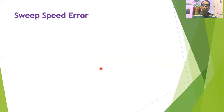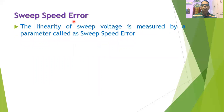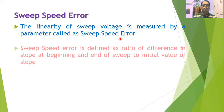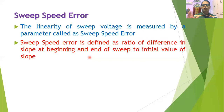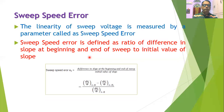Now we will understand one important parameter about the sweep voltage called the sweep speed error. This parameter is used to describe the linearity of the sweep voltage. The linearity of the sweep voltage is measured by this parameter called sweep speed error. Sweep speed error is defined as the ratio of the difference in the slope at the beginning and at the end of the sweep to the initial value of the slope. Whenever we compute the slope at the beginning and at the end of the sweep voltage, take the difference, and divide it by the initial value of the slope, that is called the sweep speed error.